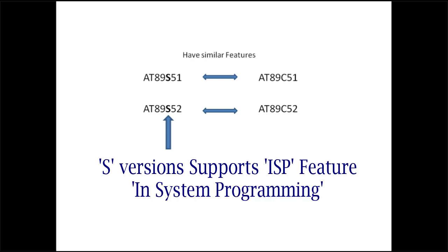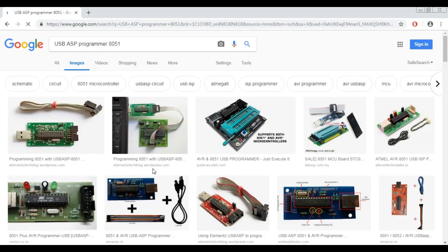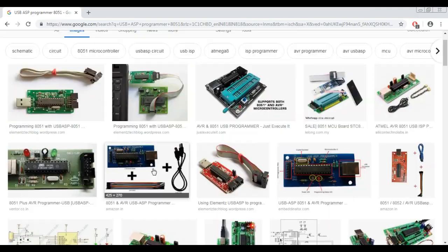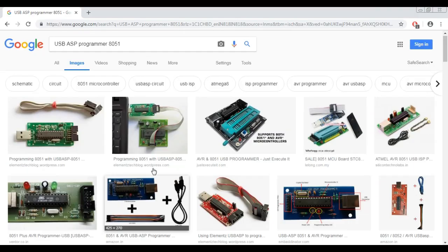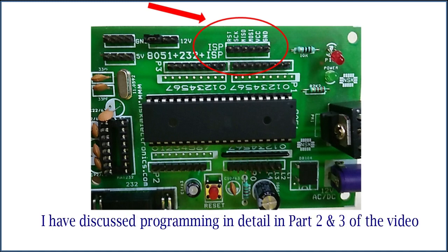ISP stands for In-System Programming. This feature allows you to program the IC on the project board itself. To use this feature, you have to use a USB-ASP programmer and connect it to the ISP pins available on the project board. Programming of 8051 chips is discussed in detail in parts 2 and 3 of this video series.